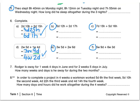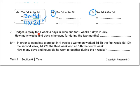Next let's look at question 7. Roger is away for 1 week and 4 days in June, and 2 weeks and 5 days in July. How many weeks and days is he away for during the 2 months? All we need to do is add these two together. We add our weeks first: 1 week plus 2 weeks gives us 3 weeks. If we add our days we get 9 days in total. But 9 days is equal to 1 week and 2 days. So our final answer is 4 weeks and 2 days. Press pause to complete 7 and 8 by yourself in your workbook.